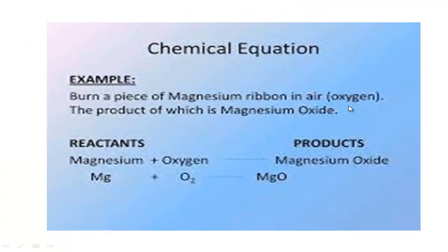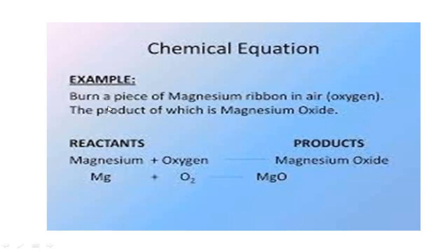This is the reaction: burning or combustion of magnesium. When we burn a piece of magnesium ribbon in air — that is, in oxygen — a product is produced which is magnesium oxide. The equation is: magnesium + oxygen → magnesium oxide. When writing a reaction, you have to first write it in language — for example, 'when magnesium ribbon reacts with oxygen, magnesium oxide is produced.'